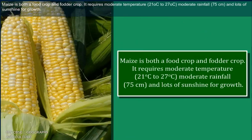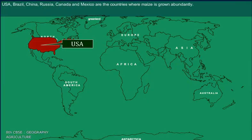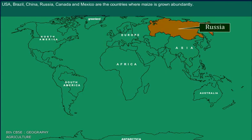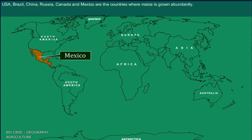Maize is both a food crop and a fodder crop. It requires moderate temperature of 21 to 27 degrees Celsius, moderate rainfall of 75 cm, and lots of sunshine for growth. USA, Brazil, China, Russia, Canada, and Mexico are the countries where maize is grown abundantly.